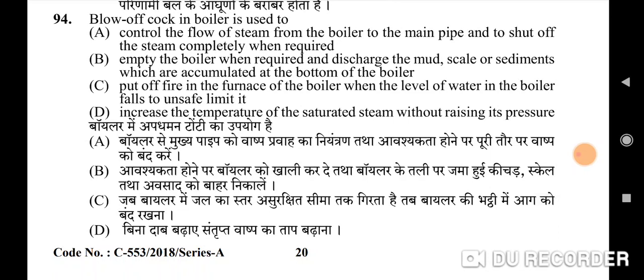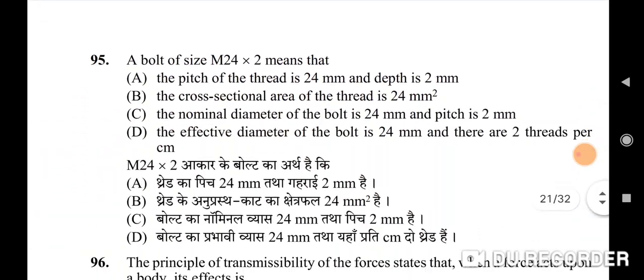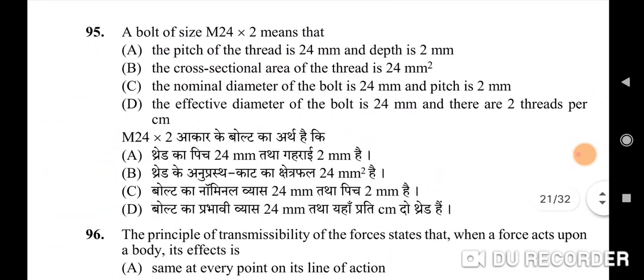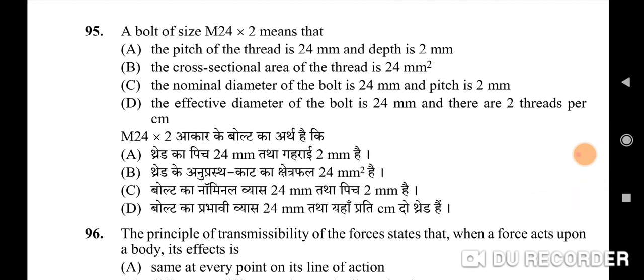Ninety-fourth question: the blow-off cock in a boiler is used to — correct option is B: empty the boiler when required and discharge the mud, scale, or sediments accumulated at the bottom of the boiler. Ninety-fifth question: a bolt of size M24×2 means — correct option is C: the nominal diameter of the bolt is 24 mm and the pitch is 2 mm.